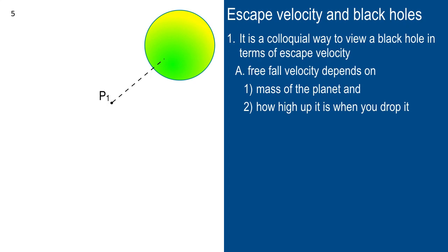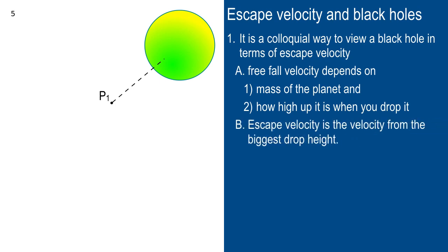So you think about freefall from point P1, and you drop a baseball towards the surface of this greenish-yellow planet. Just before impact, it has a certain freefall velocity. Escape velocity is the velocity from the biggest possible drop height. If you take a trajectory out a little further to point P2 and drop an identical baseball, by the time it impacts you're going to have more velocity than if you dropped it from point P1.